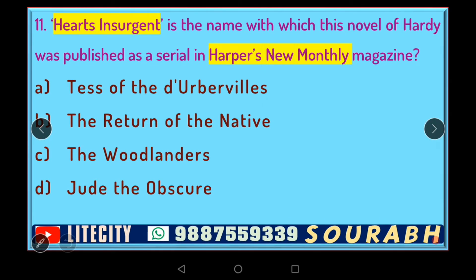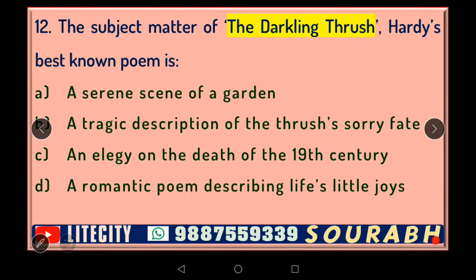'A Heart's Insurgent' is the name with which this Hardy novel was published as a serial in Harper's New Monthly Magazine. This was the novel that virtually put an end to Hardy's career as a novelist — he was so badly received and got so many negative reviews that he decided to write no more novels and turned to poetry. It was 'Jude the Obscure,' published first with the serial title 'Heart's Insurgent' and then as a novel titled 'Jude the Obscure.'